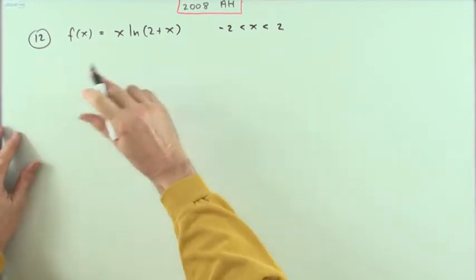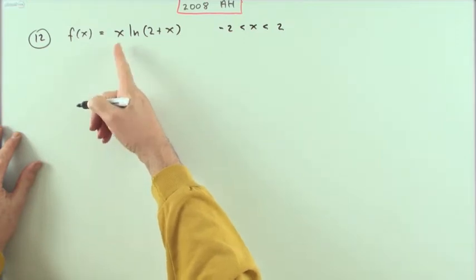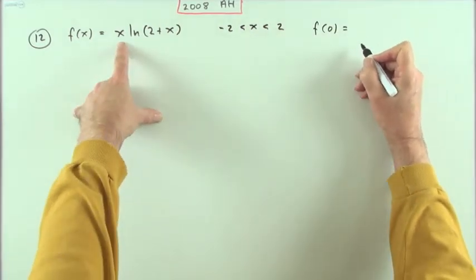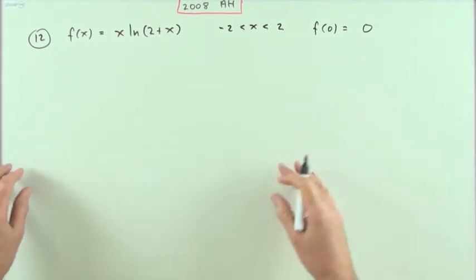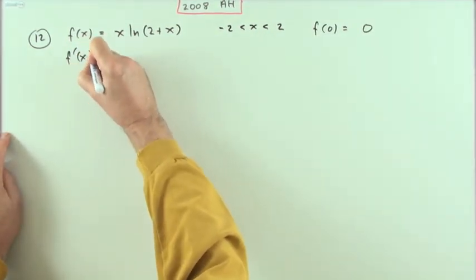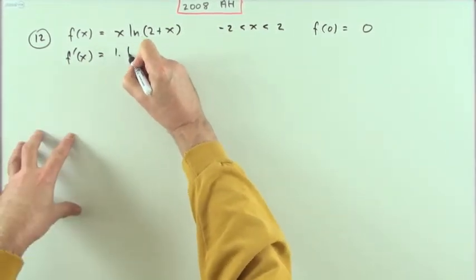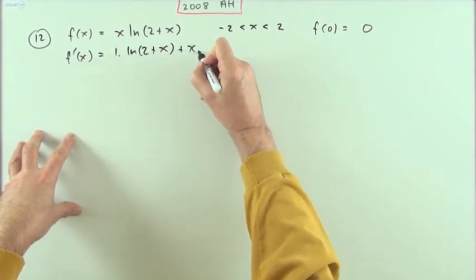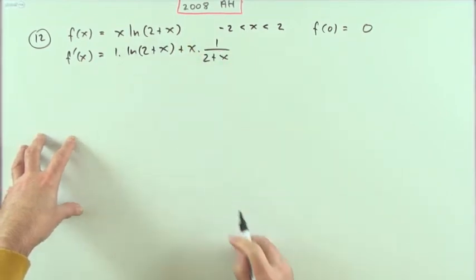First, what's the value when x is zero? Well, that's zero, so we haven't got a constant term — I'm going to have to go through at least three differentiations. What's the first derivative going to be? I've got a product here, so it'll be one times the derivative of the first part, leaving the rest alone, plus x times the derivative of ln(2+x), which is 1 over (2+x), and the derivative of the inner function is just one.